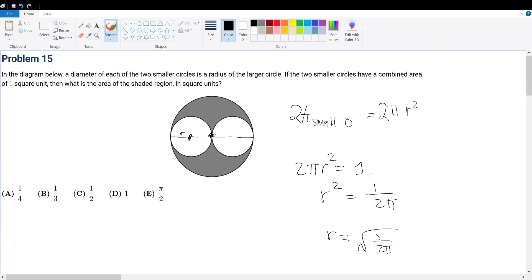Now we know that twice the radius gives diameter, so times two. This becomes 2 times square root of 1 over 2π, and that is equal to the diameter.